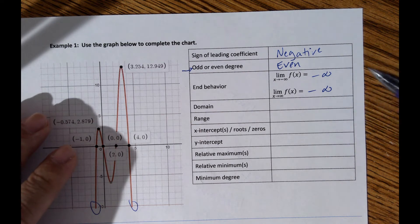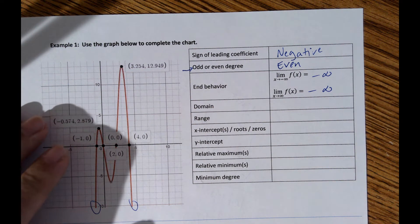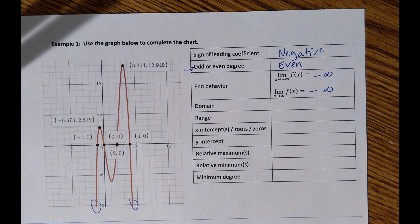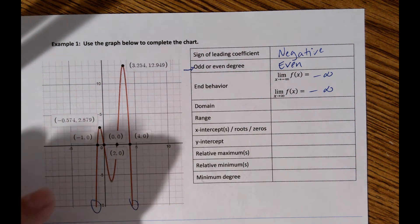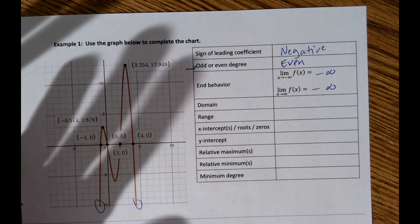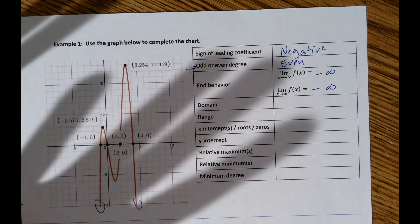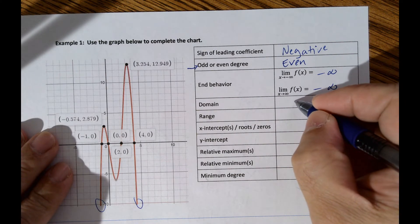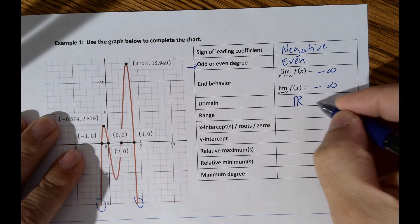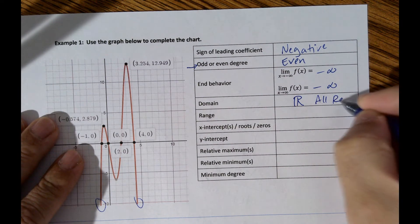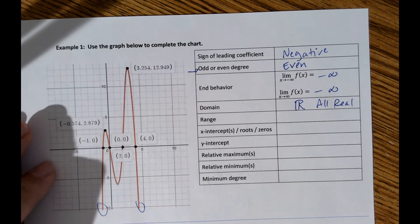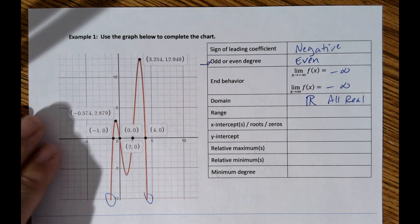Those are your only options in this section of math for end behavior: positive infinity or negative infinity. For domain: for all polynomials, the domain is all real numbers. You can write the symbol for real numbers, write 'all real numbers,' or abbreviate it.